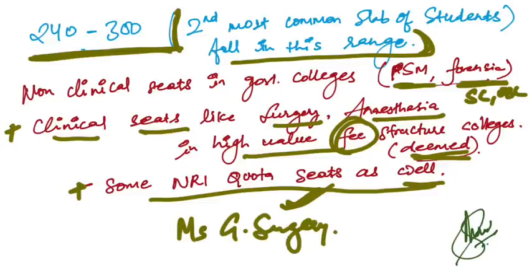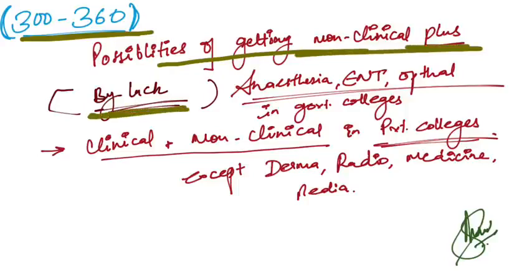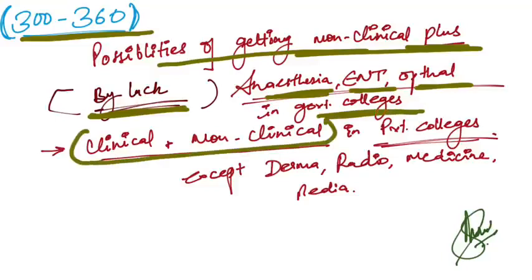If your score is lying in 300 to 360, there's probability of getting non-clinical seats plus by luck anesthesia, ENT, or ophthalmology in government colleges. Clinical and non-clinical branches in private colleges except derma, radio, medicine, and pediatrics. Other clinical branches you can expect in private colleges in this rank, and also non-clinical branches in government colleges.